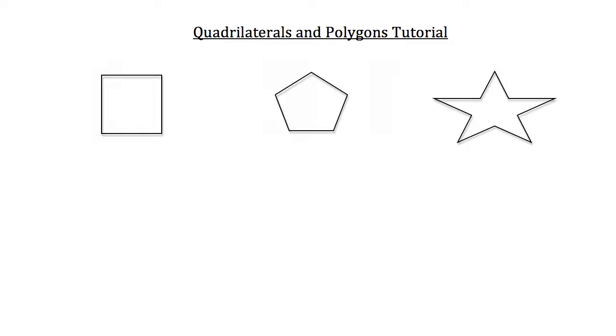Poly meaning many, gon meaning side. And the last figure is your typical star which is also a polygon.